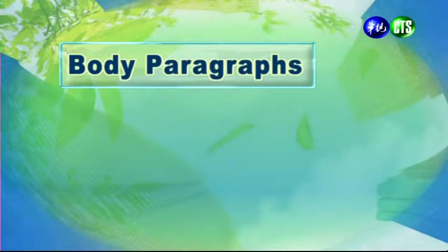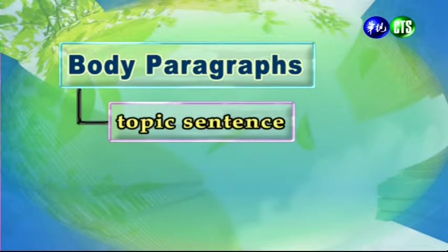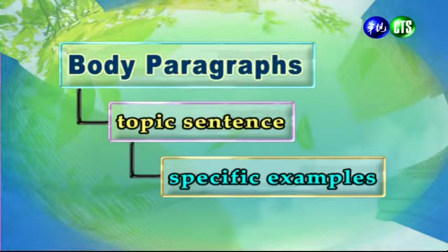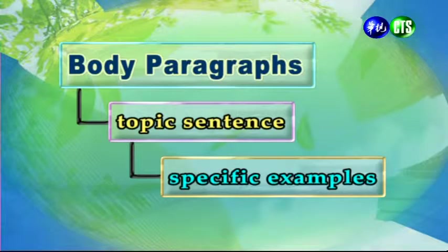Each paragraph should have a topic sentence that explains the main idea of your paragraph. 每一個段落都應該有所謂的主題句，能夠用來表明段落的主旨。You should also use specific examples to give clear details to support your ideas. 各位同學也要提供一些明確的例證來支持你的論點。And there are a few differences between a body paragraph and the stand-alone paragraphs that we wrote during the first semester.